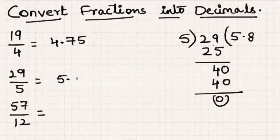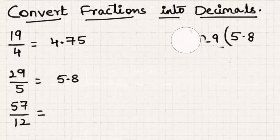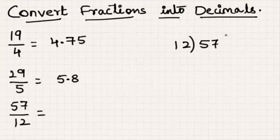Hence, 5.8 is the decimal form of 29 by 5.